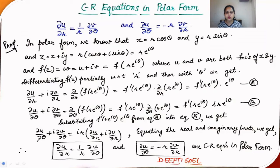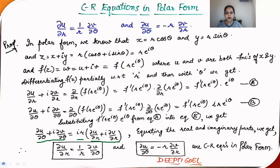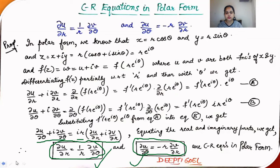Equating real and imaginary parts on both sides of the equation ∂u/∂θ + i∂v/∂θ = ir(∂u/∂r + i∂v/∂r), we get: equating the real part, ∂u/∂θ = -r ∂v/∂r; and equating the imaginary part, ∂u/∂r = (1/r)∂v/∂θ. These are the two CR equations in polar form.